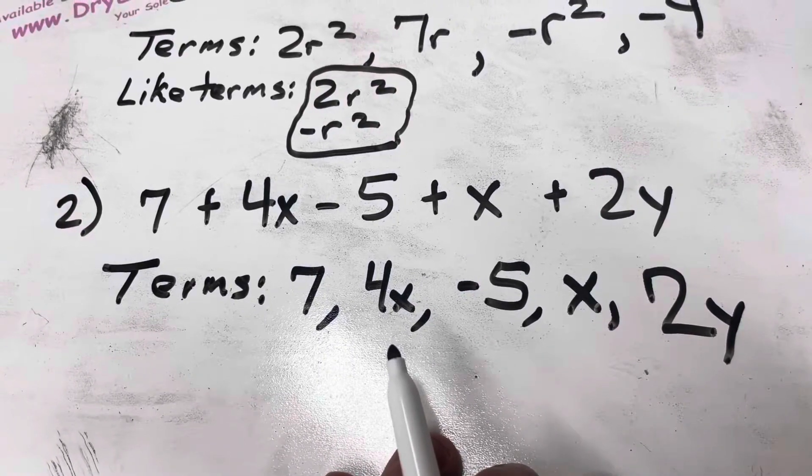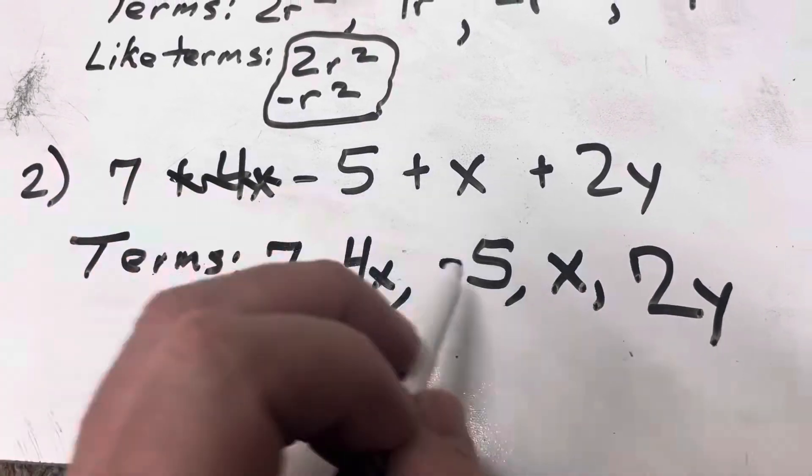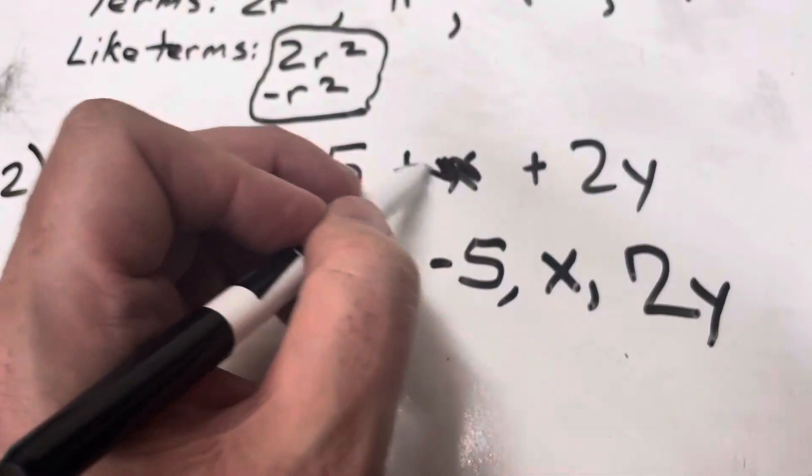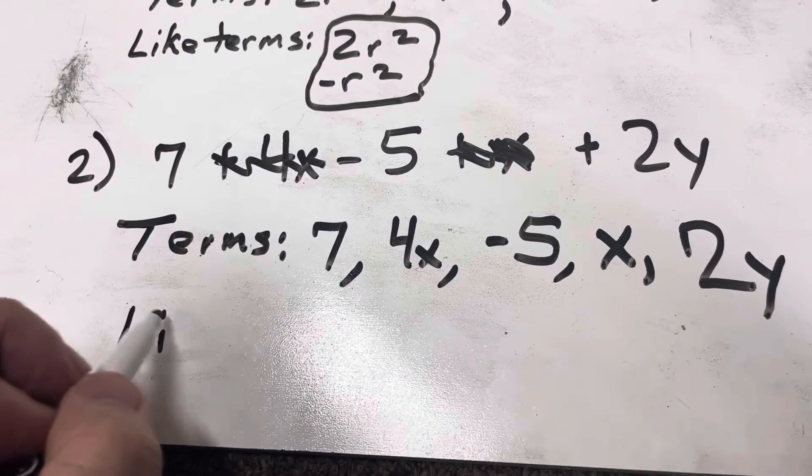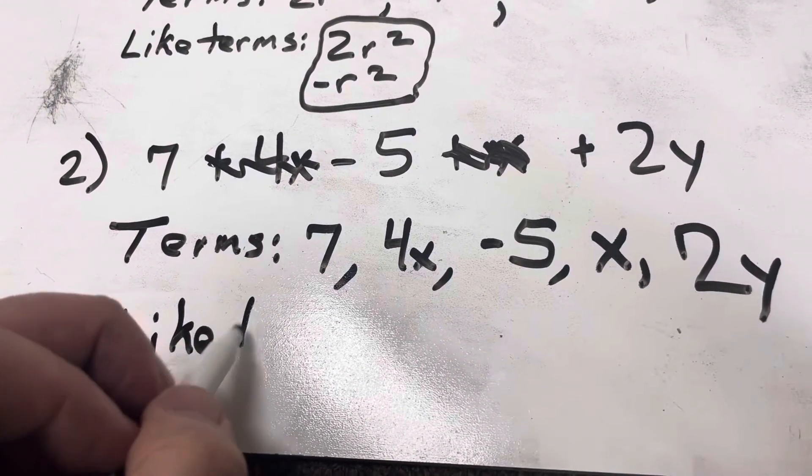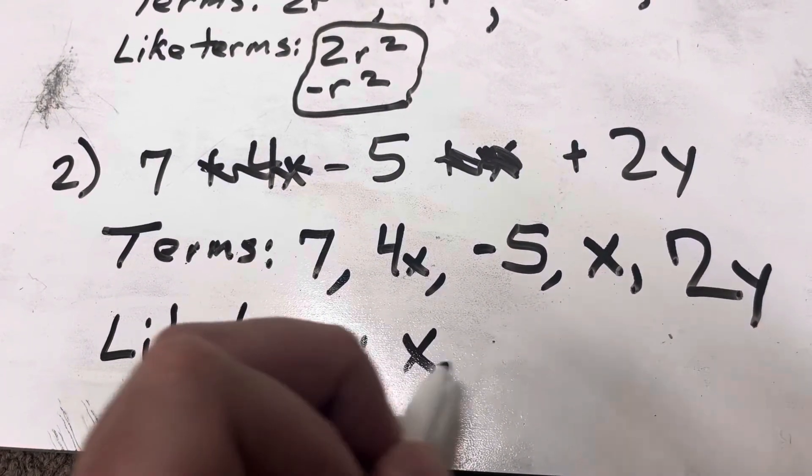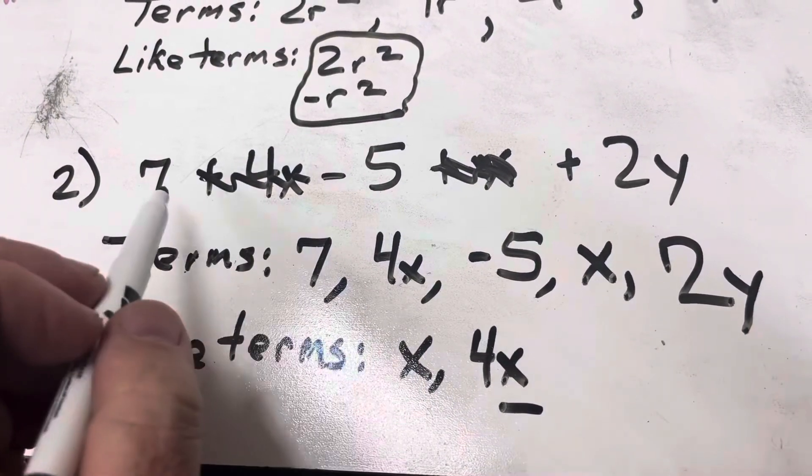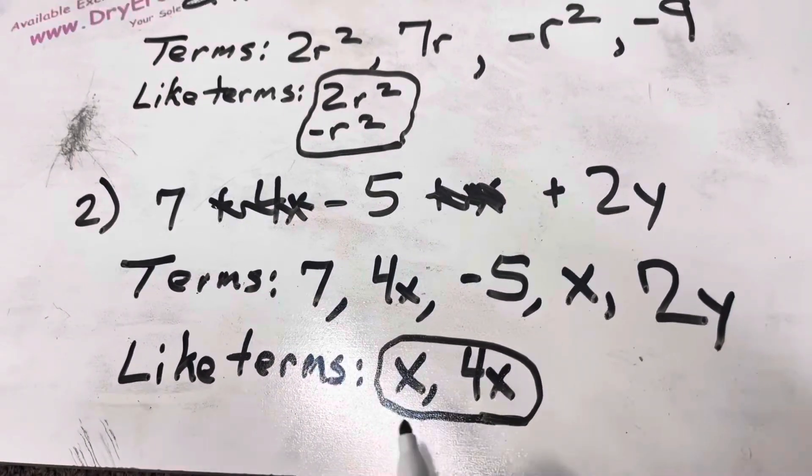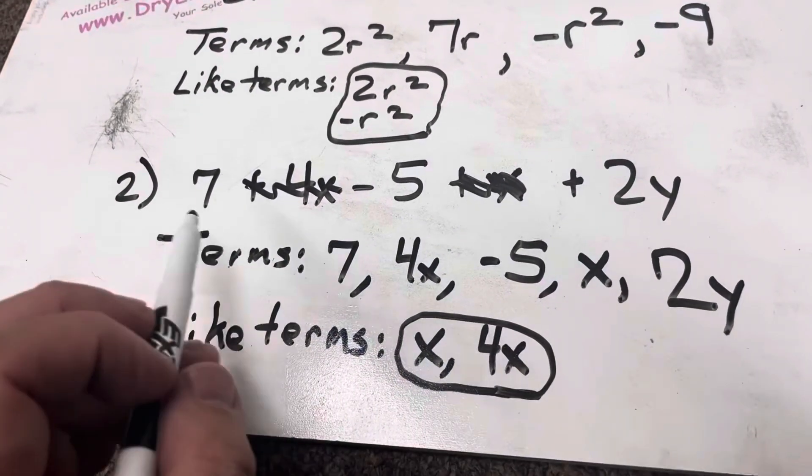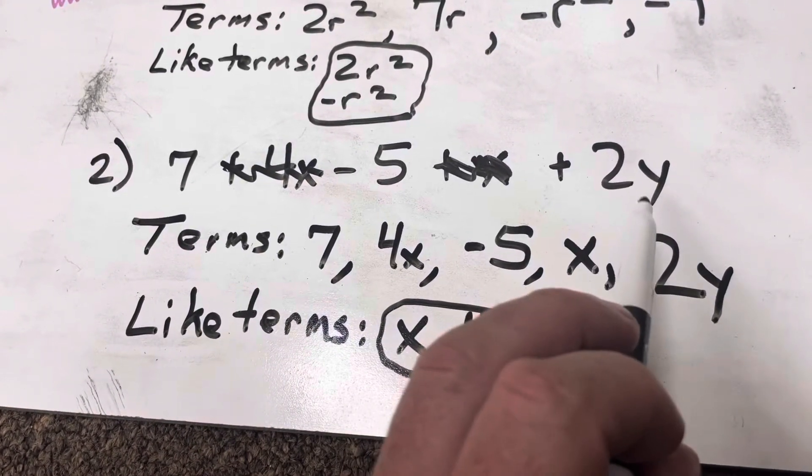Now, like terms, numbers that have the same variable and the same exponent. Well, I have a positive 4x. And then I just have x. Same variable, x. Same exponent. There isn't one. So like terms would be x and 4x. There's nothing else with just an x. So I'll go ahead and circle that. But then I see that I have a y here. Nothing else has a y. So there's no like term with that.